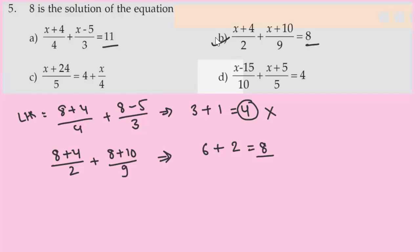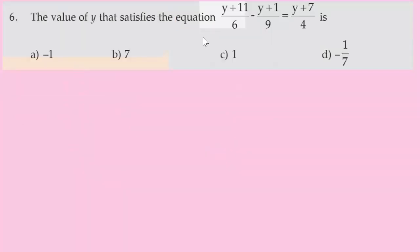Question number 6: the value of y that satisfies the equation (y+11)/6 minus (y+1)/9 equals (y+7)/4. Options are: minus 1, 7, 1, minus 1/7.